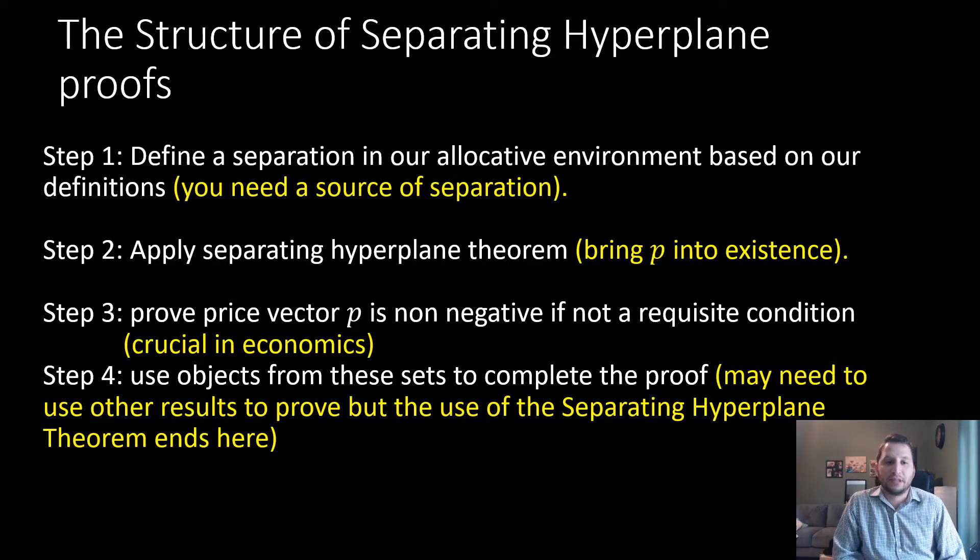Before we proceed, we're going to remind ourselves of the structure of the separating hyperplane theorem proofs. First, we define a separation in our allocative environment based on our definitions. Then we apply the separating hyperplane theorem, which will bring p into existence. We then prove our price vector p is non-negative if this is not a requisite condition. And step four is that we use objects from our set to complete the proof.